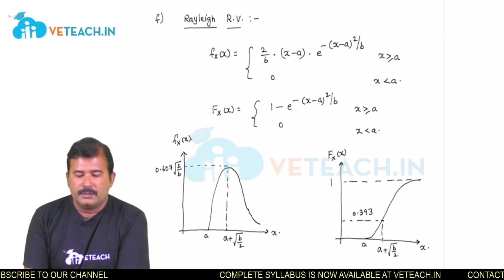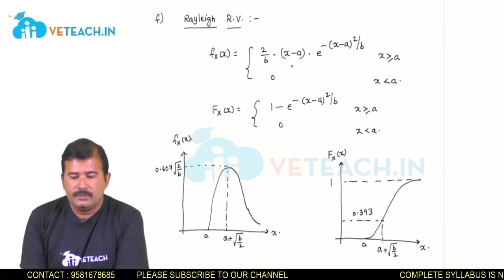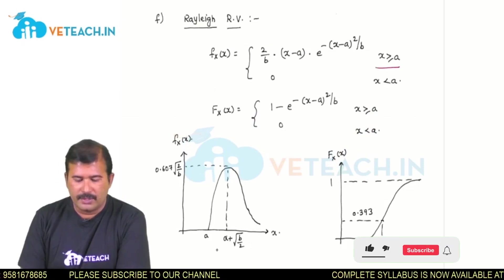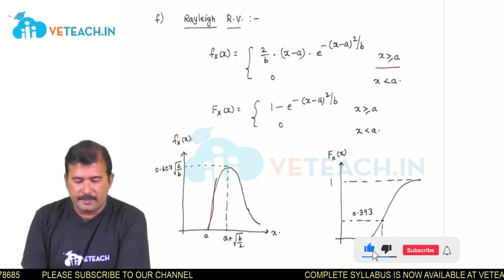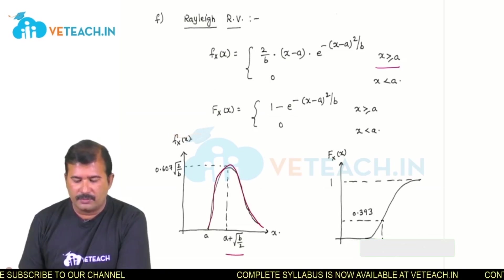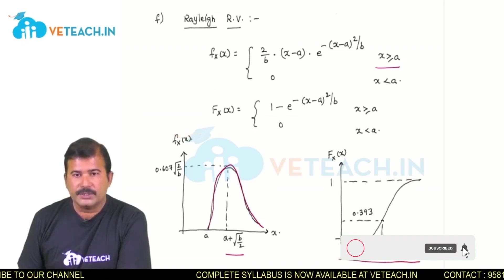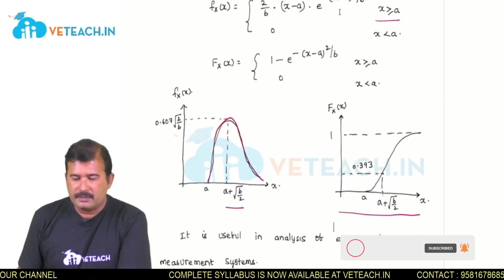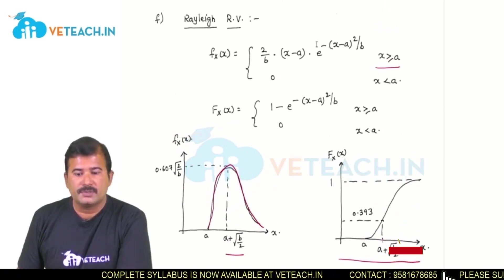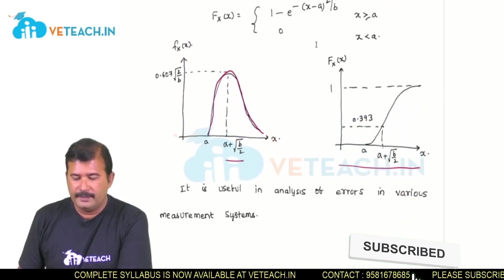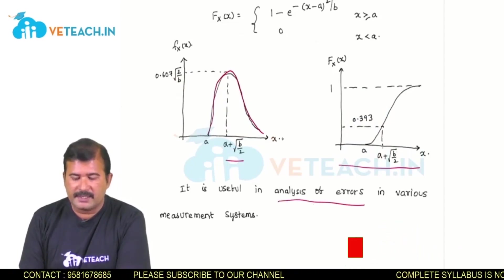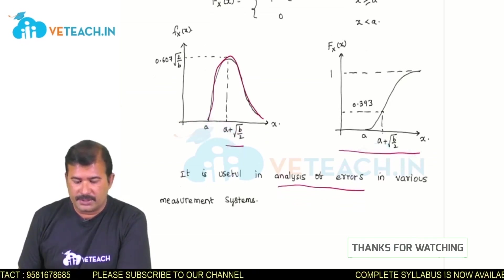The Rayleigh random variable has density function 2 by b into x minus a into e power minus of x minus a whole squared by b, for x greater than or equal to a. Its maximum value occurs at a plus square root of b by 2. The Rayleigh random variable is useful in measurement error analysis in various measurement systems, as the errors in these systems exactly match the Rayleigh distribution.